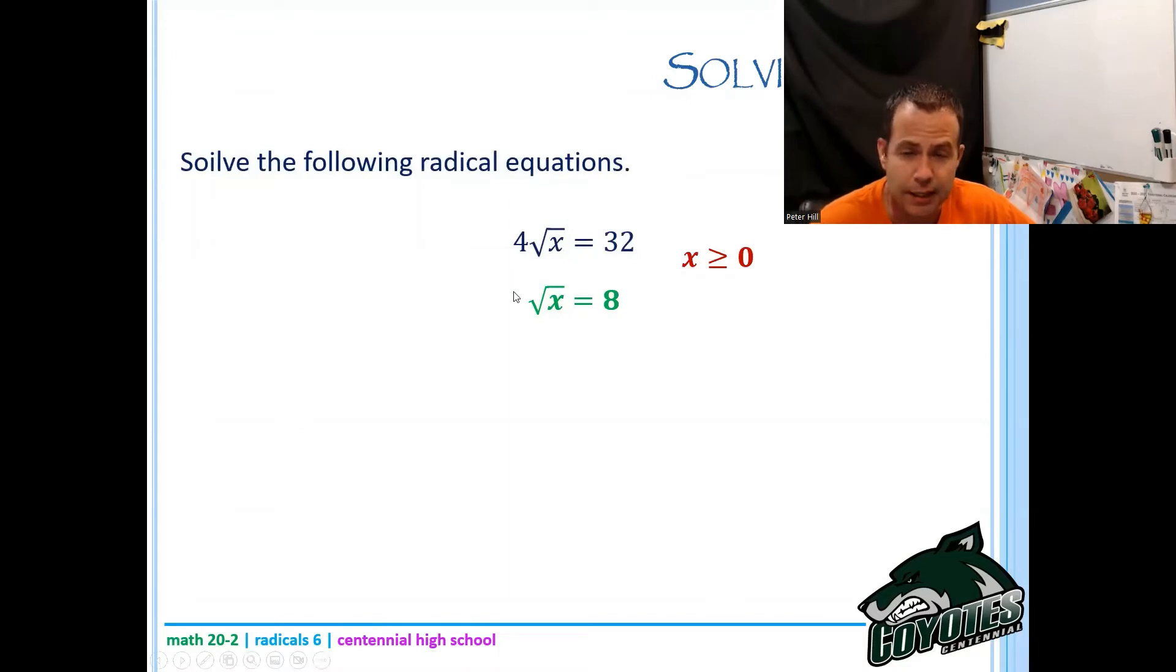Now I'm ready to get rid of the root. And so I'm going to square both sides. I'm taking this side here and squaring and I'm taking this side here and squaring. When I square the root of x, I just get x. And when I square eight, I get 64. So I'm left with a statement that reads x equals 64.